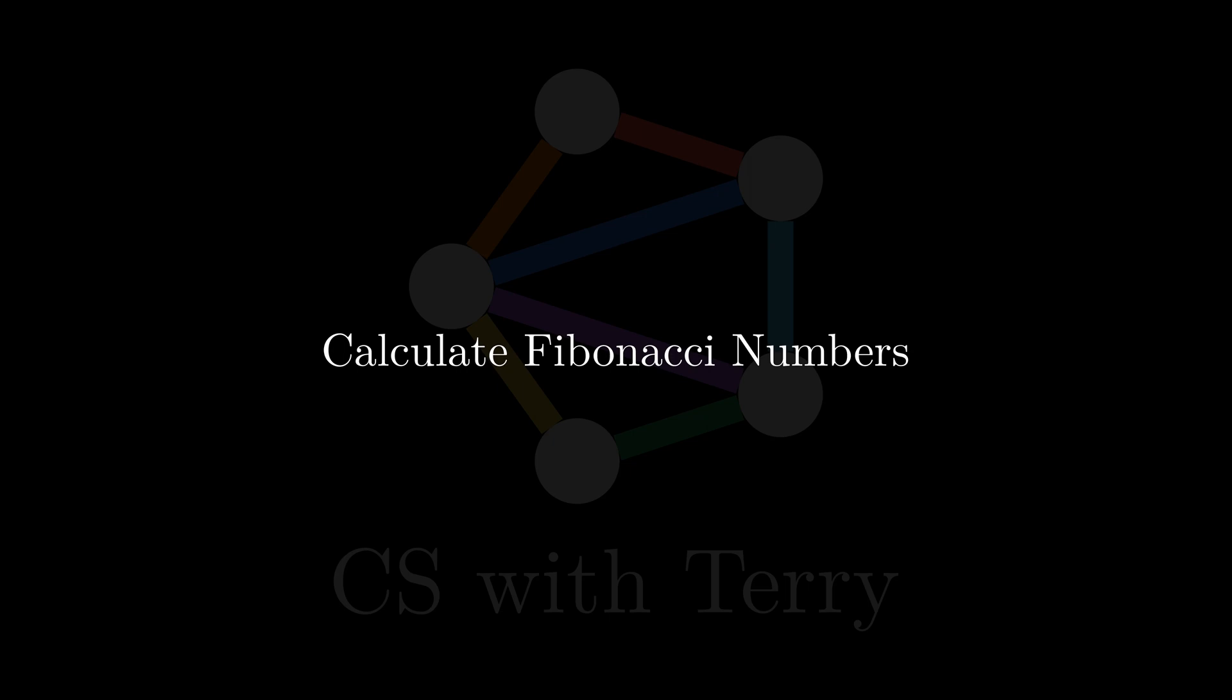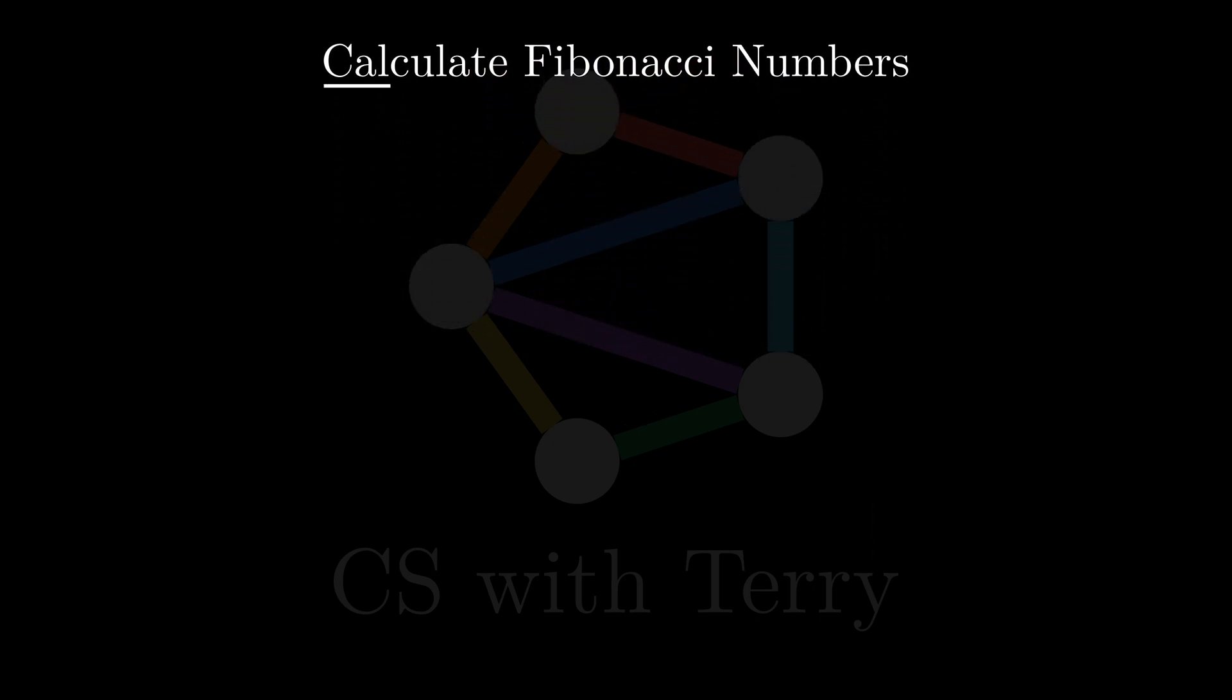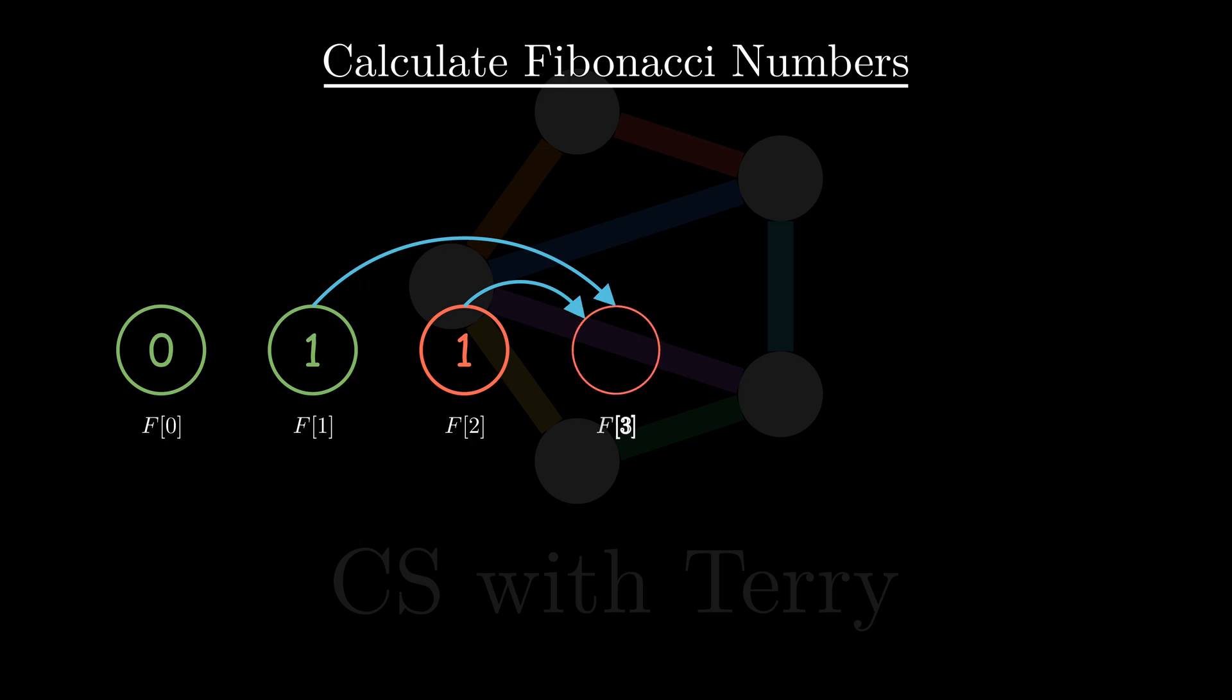Let's look at another example, how to calculate Fibonacci numbers using iterative and recursive methods. Let's briefly explain what Fibonacci numbers are. The Fibonacci sequence starts with 0 and 1, where F0 equals 0 and F1 equals 1, and each of the ensuing terms is sum of the previous two, that is, Fn equals Fn minus 1 plus Fn minus 2.